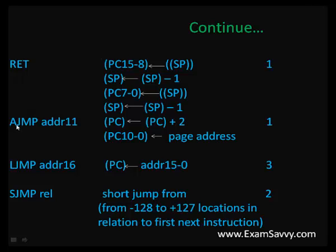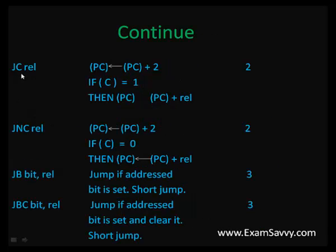AJMP: similar to ACALL and LCALL, we have LJMP and SJMP. AJMP has a size of 1-byte. LJMP (long jump) with address has a size of 3 bytes like LCALL. These are called jump instructions — similar to call instructions — with conditional and unconditional terms. SJMP (short jump): if you want a short delay, use SJMP with any label — rel represents any label name. The size is 2 bytes.